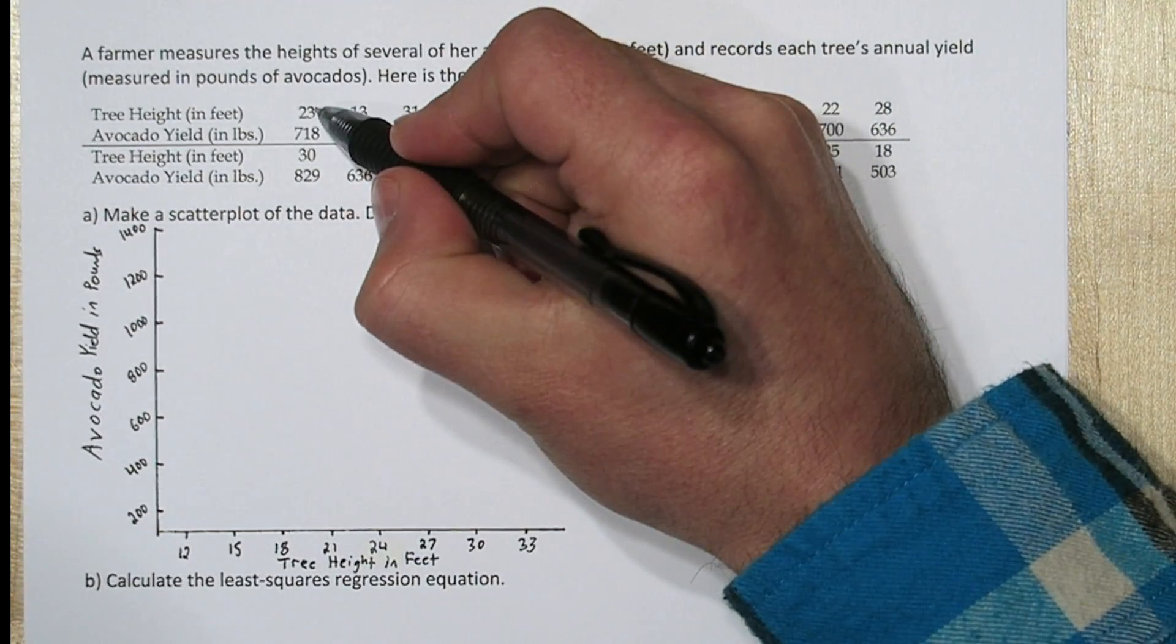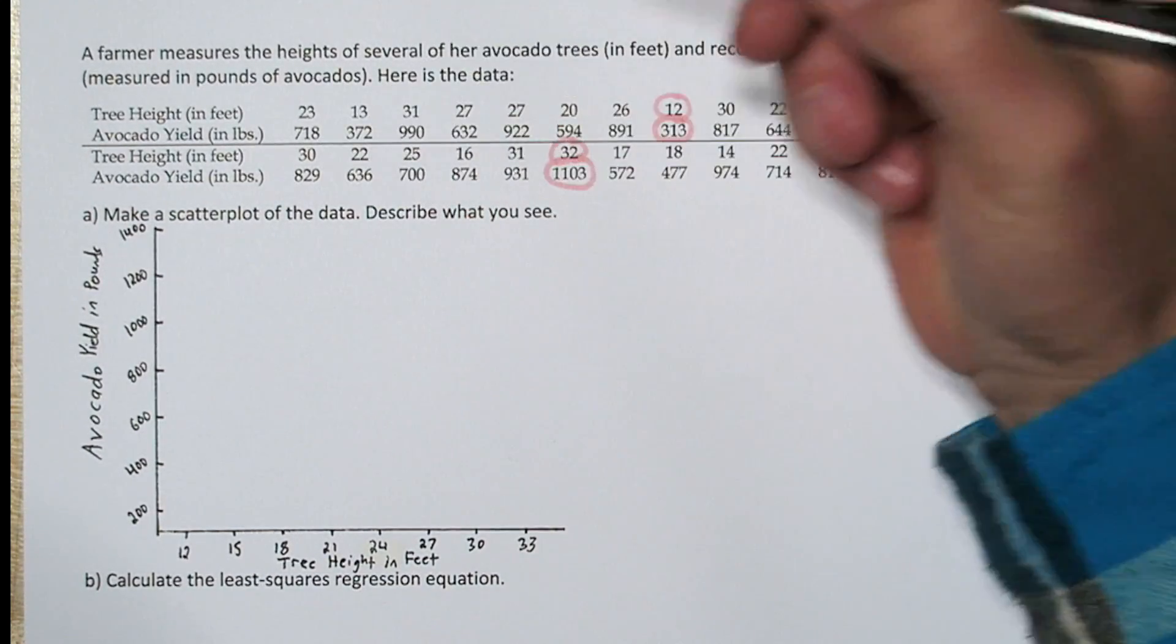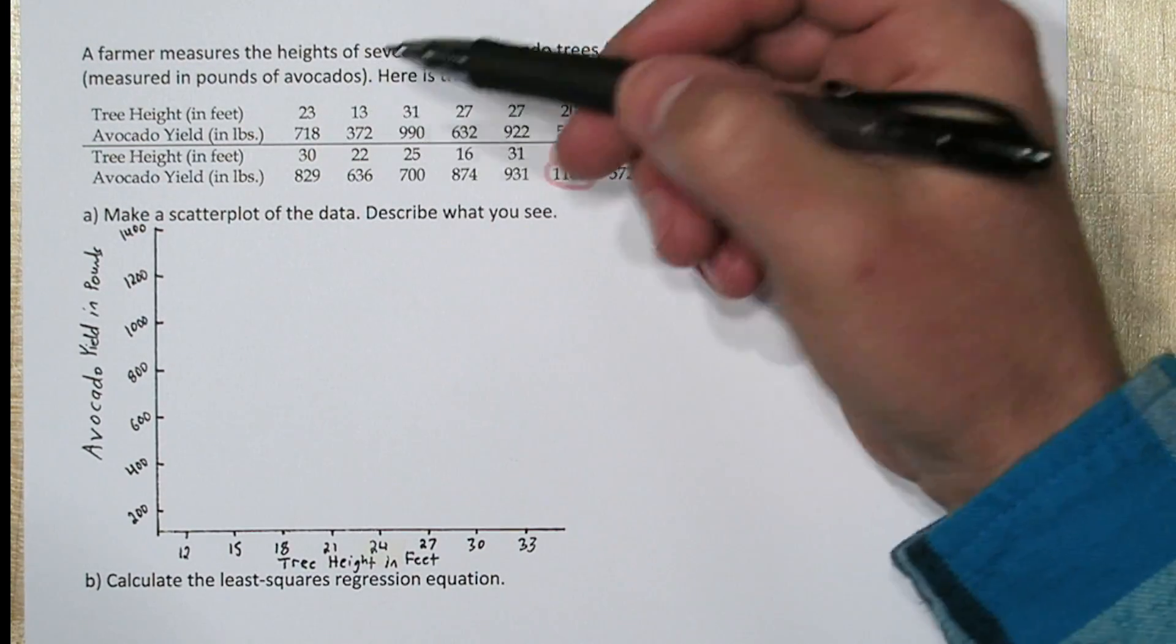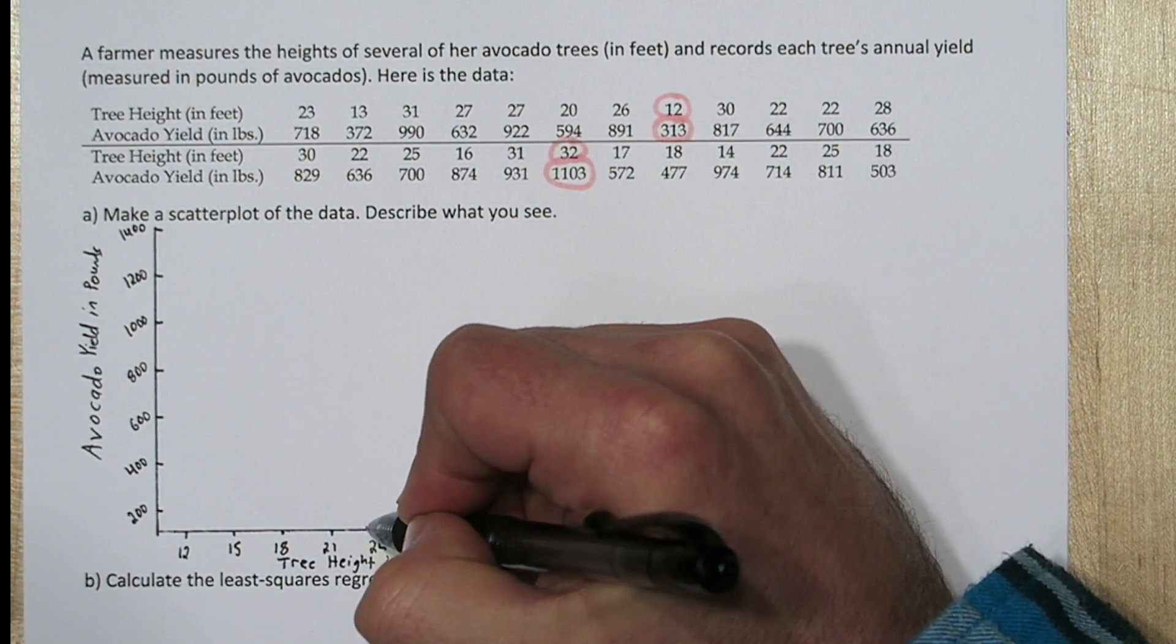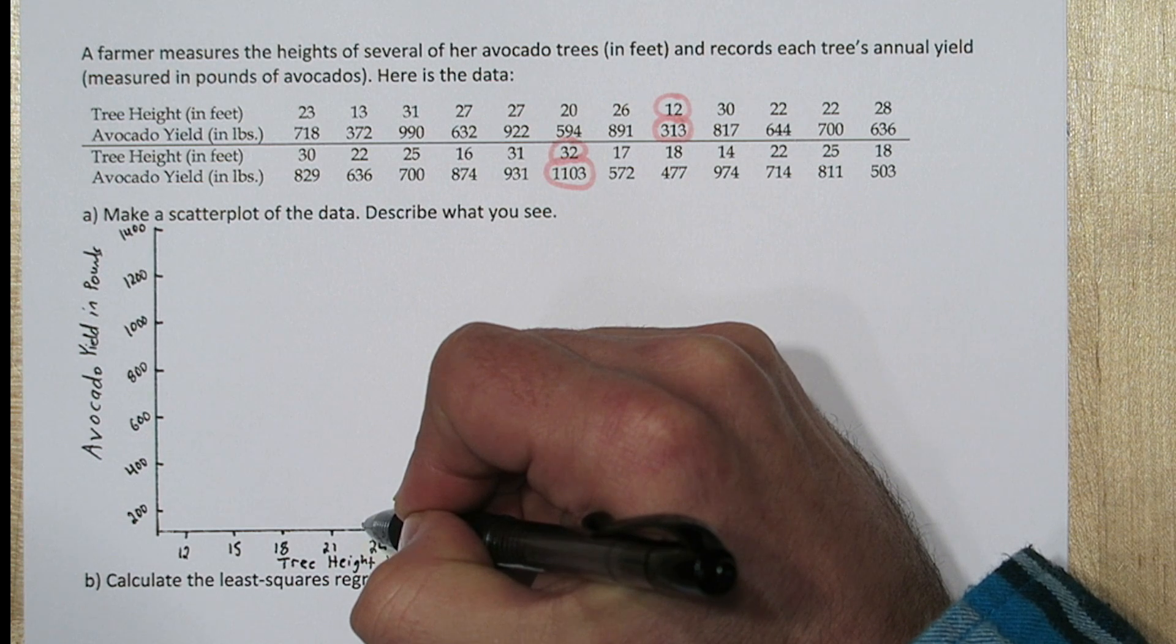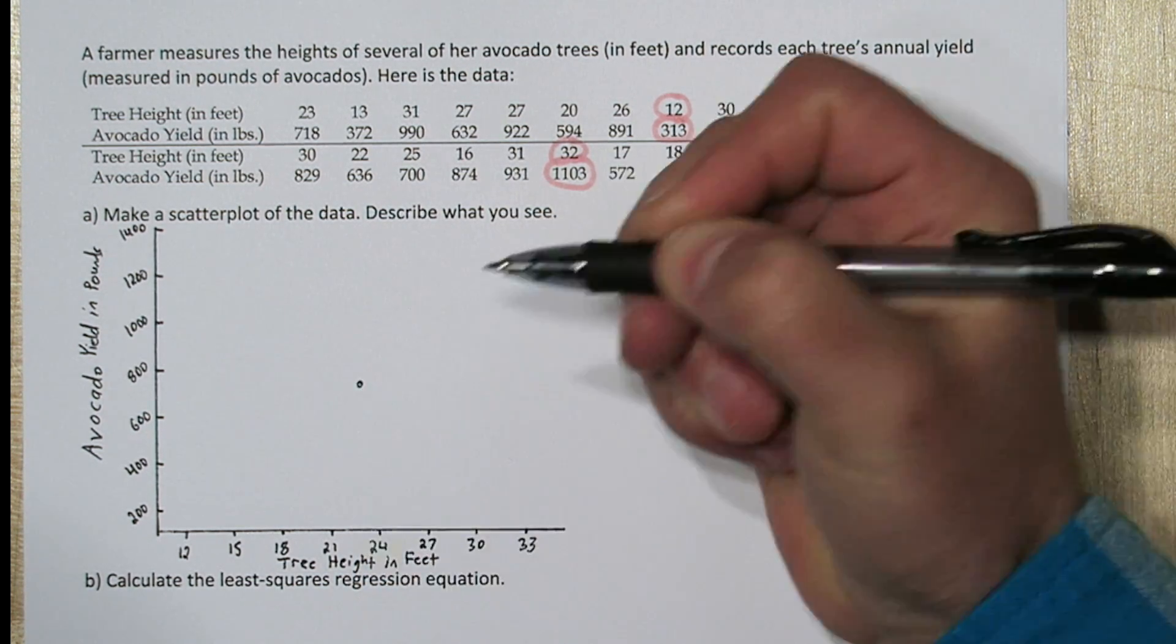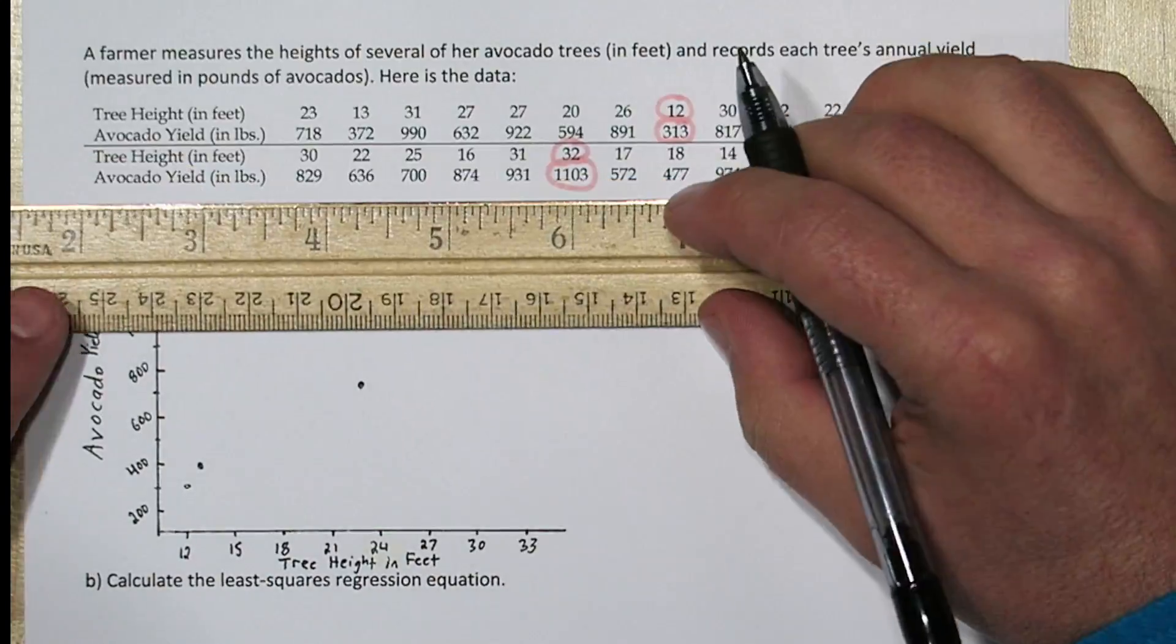So our first tree had a height of 23 feet and a yield of 718 pounds, so this is our x and y coordinate. So let's go to 23 feet, that's about here, and 718 pounds, that's about here. And we'll do that for all the points.